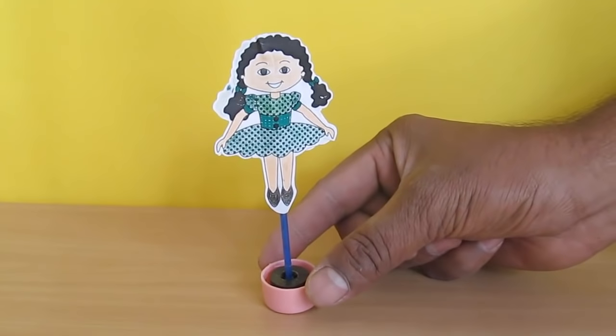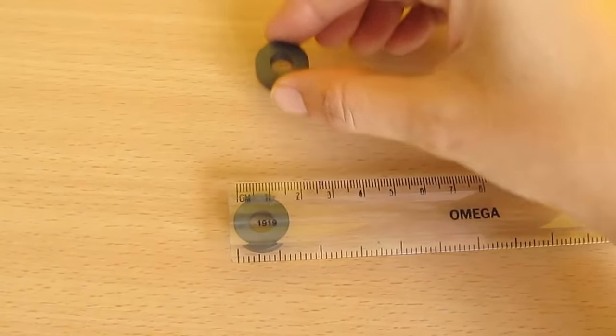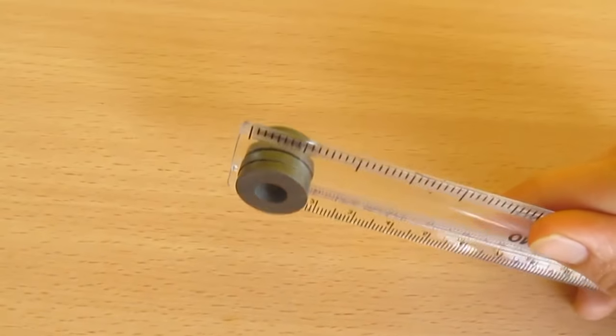Take the other two ring magnets and put them one on top of the scale and one on bottom of the scale so that they are attracted to each other, and you can now start playing with the toy.